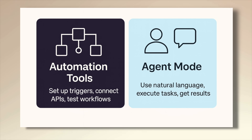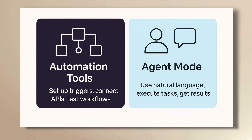It's important to emphasize the difference between agent mode and simple automation tools. Automation tools often require you to set up complex triggers, connect APIs, and test workflows. With agent mode, you speak in natural language and the agent interprets your intent, executes tasks across multiple platforms, and surfaces the result for your approval.